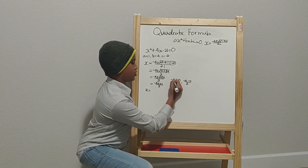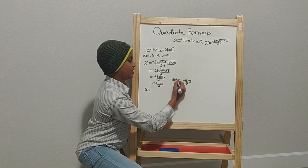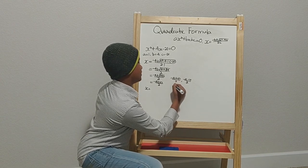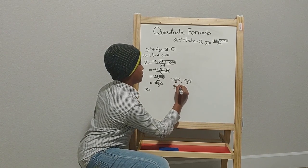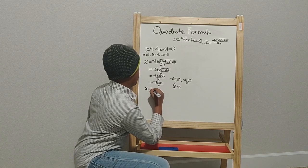x equals, let's first solve this one. Negative 4 plus 10 equals 6 over 2, which equals 3. So then x would equal 3.